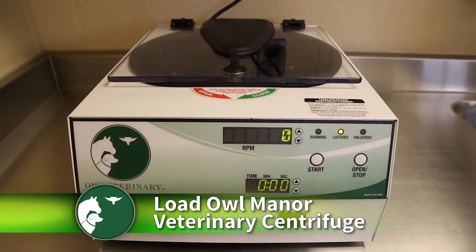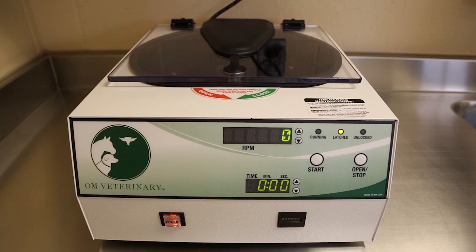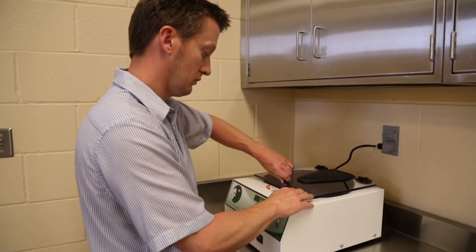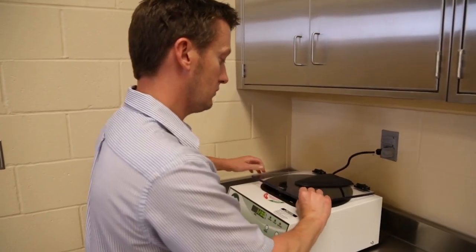At the time of the first centrifuge spin, ensure the centrifuge is on a secure and flat surface, plugged in, and the power on. Press the open button. While gently pushing down, twist the latch on the lid counterclockwise to open.